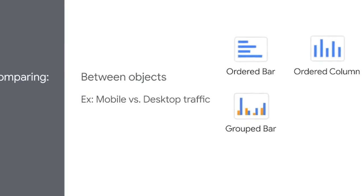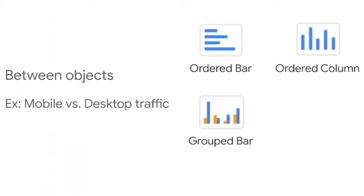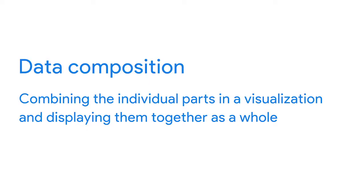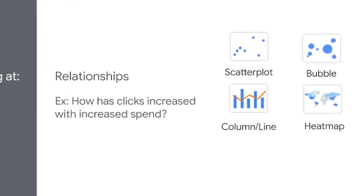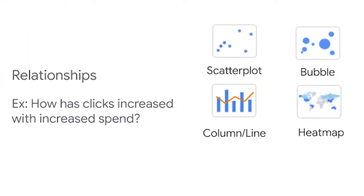Then there are charts that show parts of a whole — this is known as data composition, achieved by combining the individual parts of a visualization and displaying them together as a whole. Stacked bars, donuts, stacked areas, pie charts, and tree maps can all do this. Now to show relationships in your data, you might want to use scatter plot and bubble charts, column line charts, and heat maps.